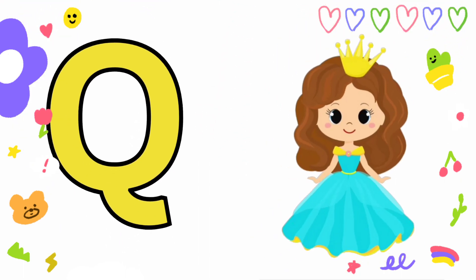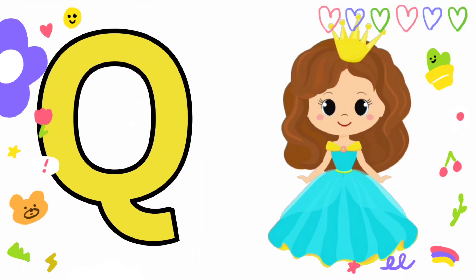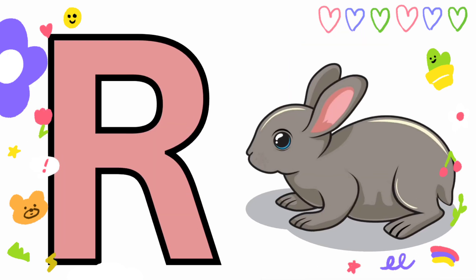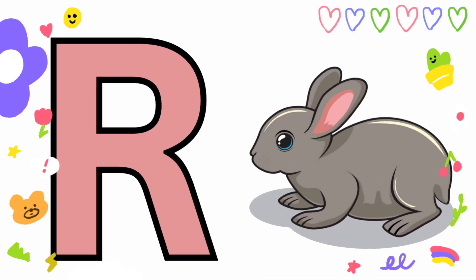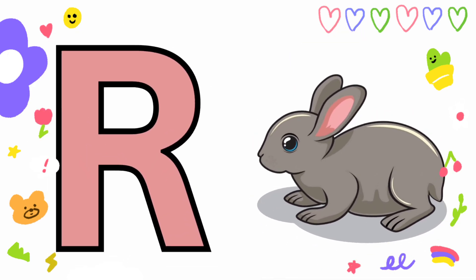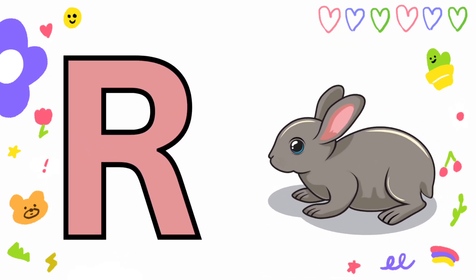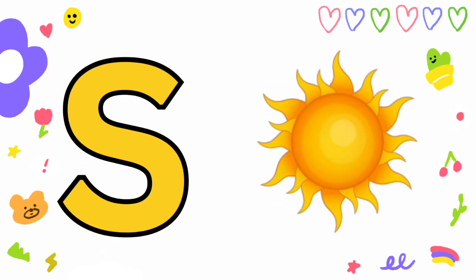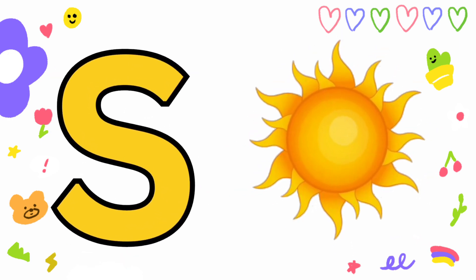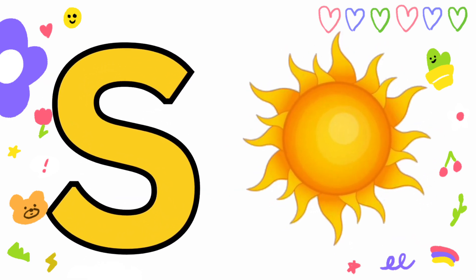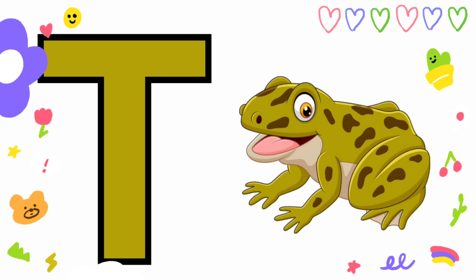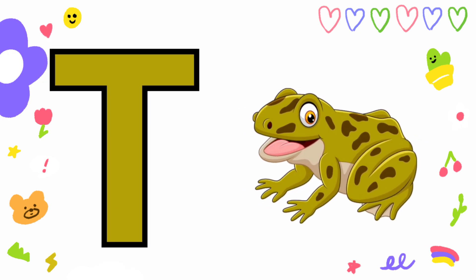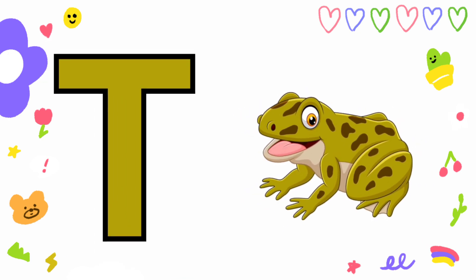Q is for Queen, Q-Q-Queen. R is for Rabbit, R-R-Rabbit. S is for Sun, S-S-Sun. T is for Toad, T-T-Toad.